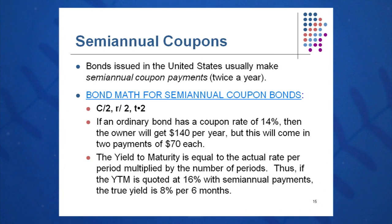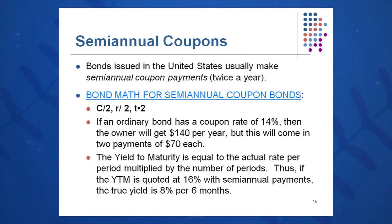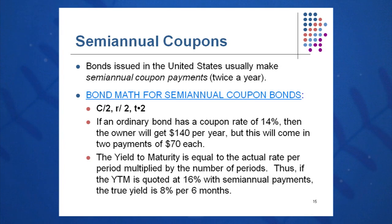A bond issued in the United States usually makes two payments a year — they're semi-annual. Whenever you see the words semi-annual coupon, you need to do some mathematical manipulation first. Instead of getting $80 a year, you get $80 spread over two payments — $40 each time you visit the paying agent. To compare apples to apples, you also divide R by two. So because you're dividing your coupon and coupon rate by two, you take R by two as well. You'll also be visiting your paying agent twice a year — 60 times over the course of a 30-year bond — so you take T times two. Simply for semi-annual coupon bonds: C divided by two, R divided by two, T times two.